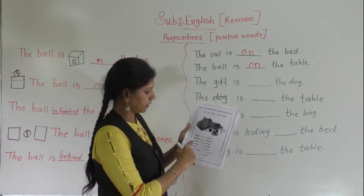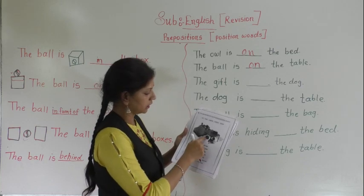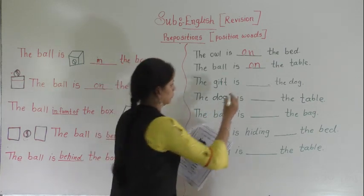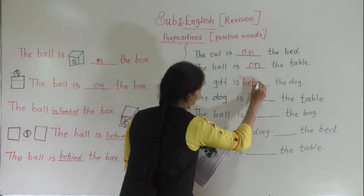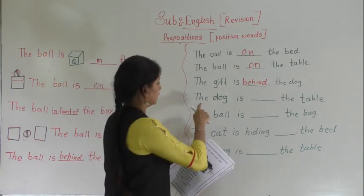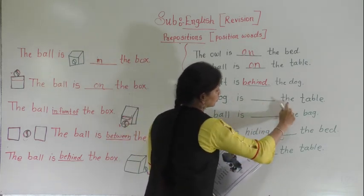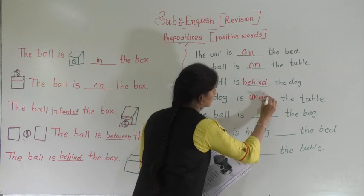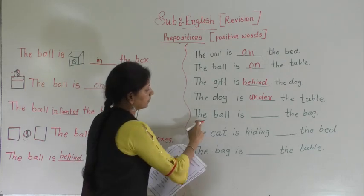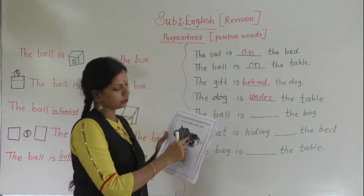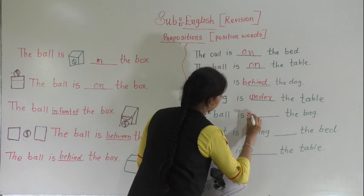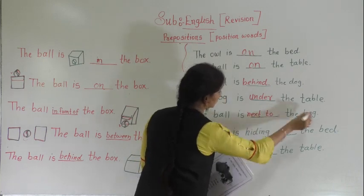The next is: the gift is dash the dog. Here you can see the position of gift. Where is the gift? Behind the dog. Write: behind the dog. Next, the dog is dash the table — under the table. You can see the position of dog; he is under the table. Next: the ball is dash the bag. Where is the ball? The ball is next to the bag.